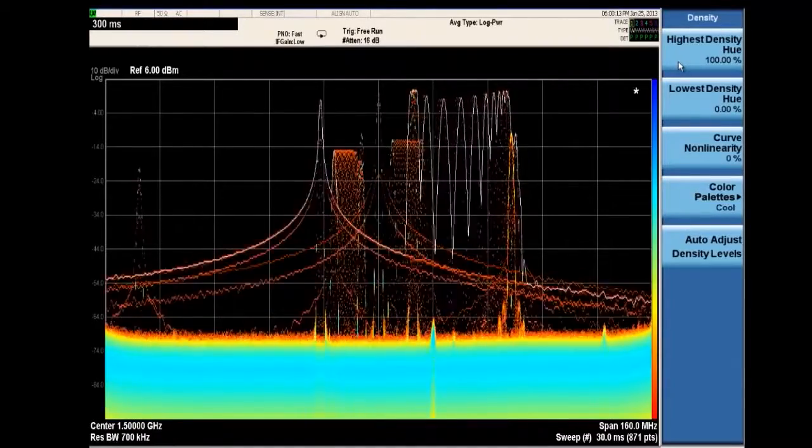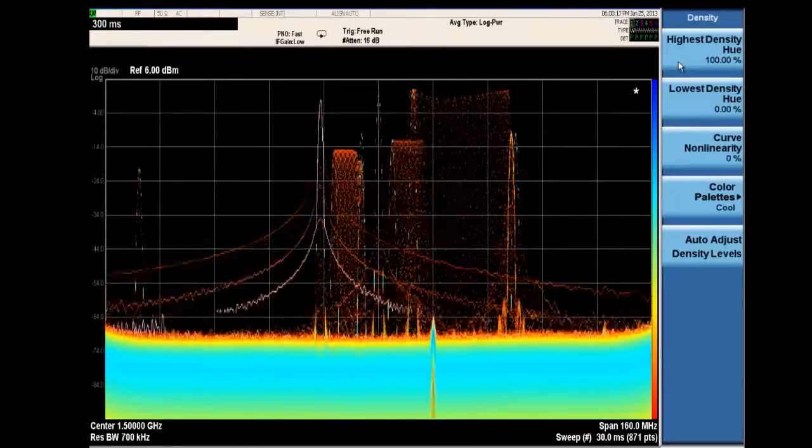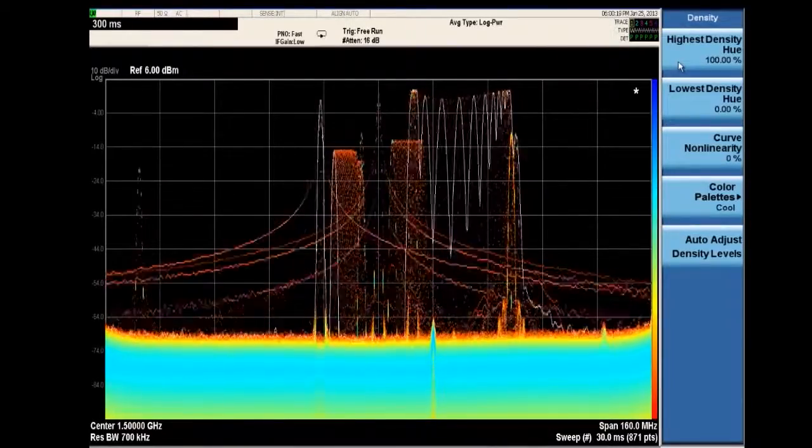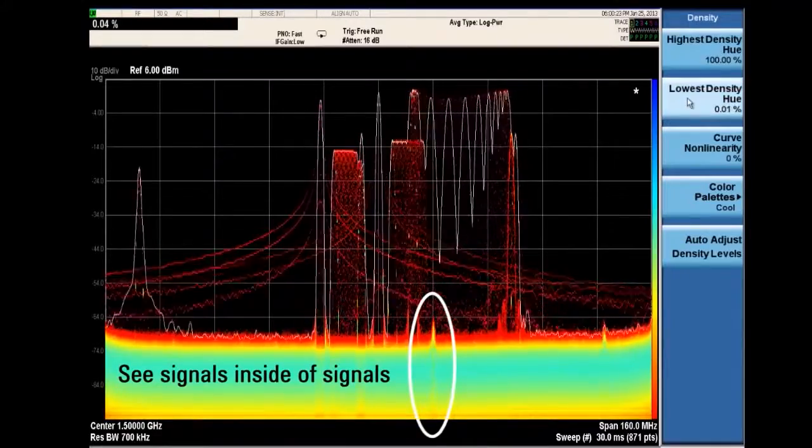In density displays, every measurement result is counted with no signals missed, and color shows how often any signal occurred in both amplitude and frequency. See signals inside of other signals.